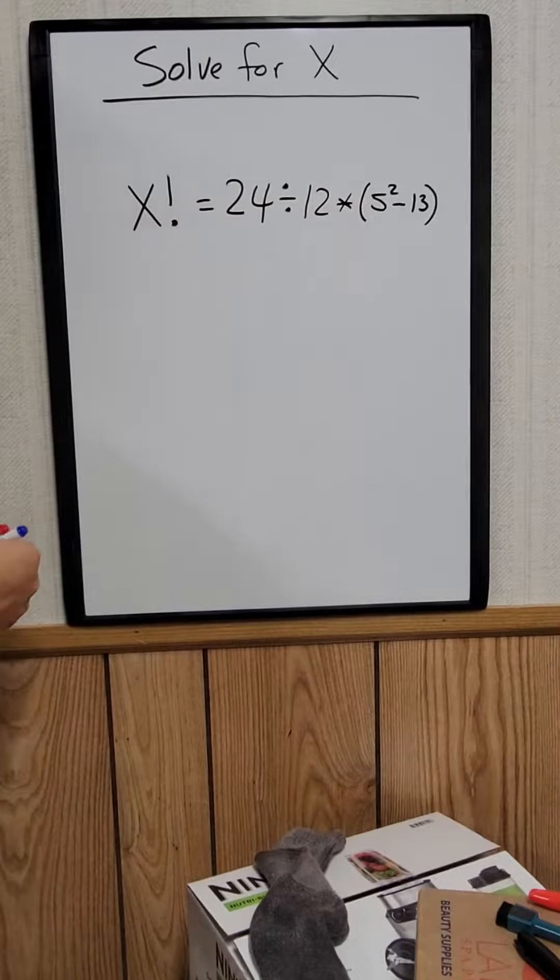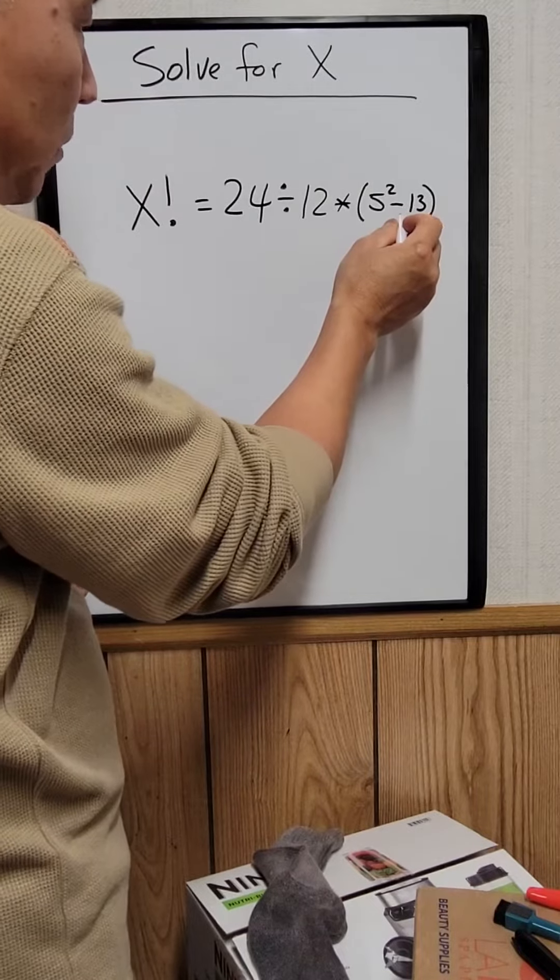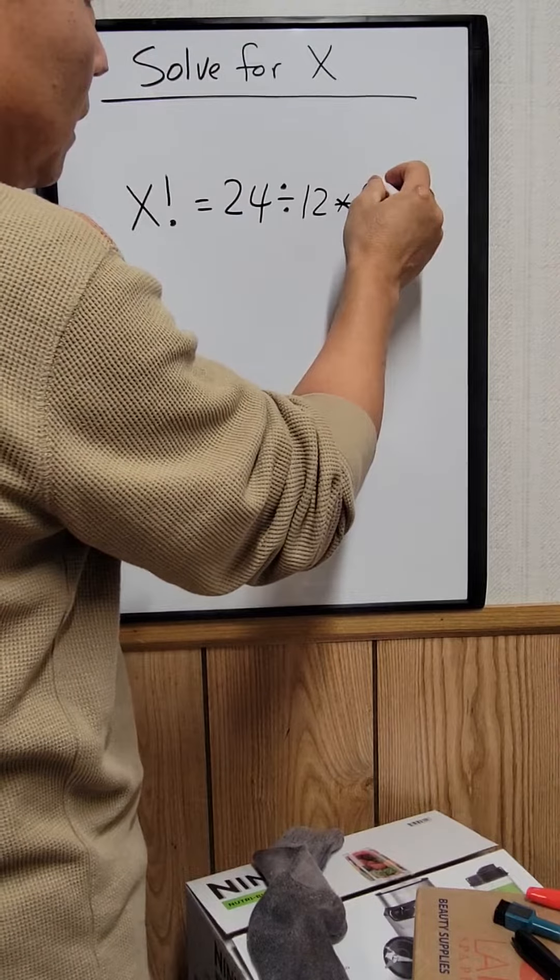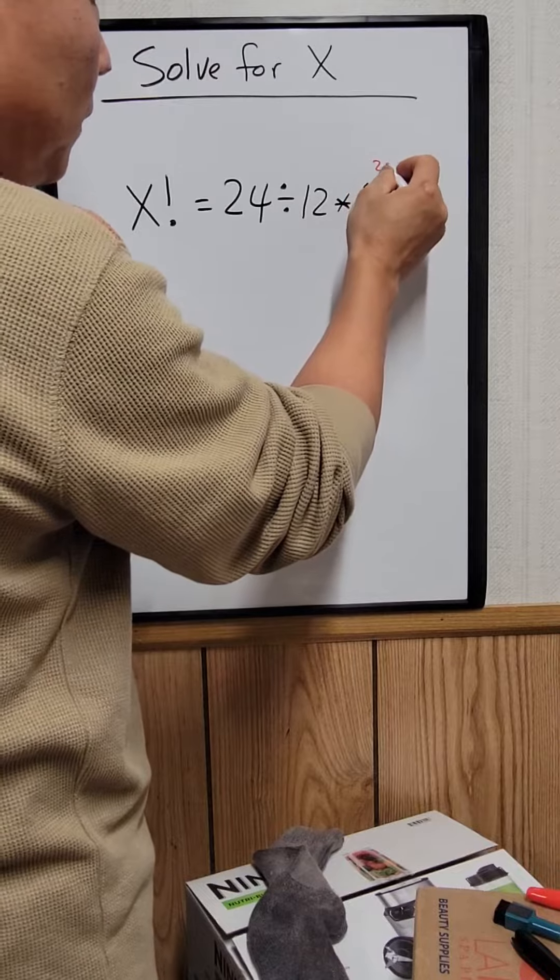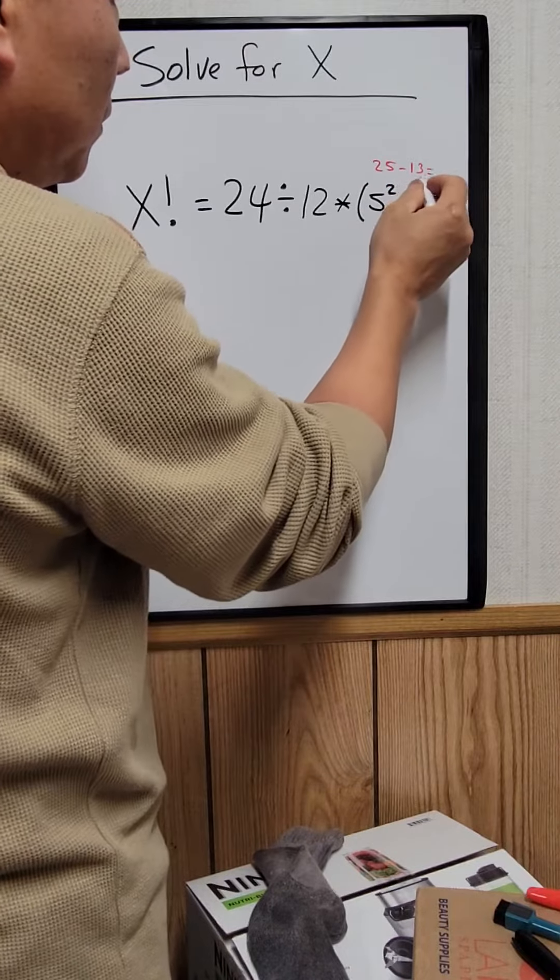Let's solve for x for this equation right here. So the first step you need to do is just solve anything inside the parentheses. So 5 squared will be 25 minus 13, that's equal to 12.